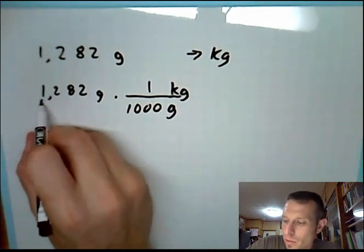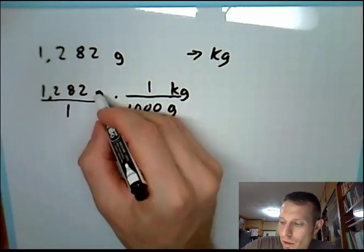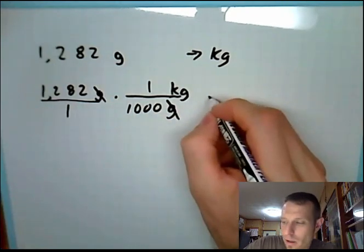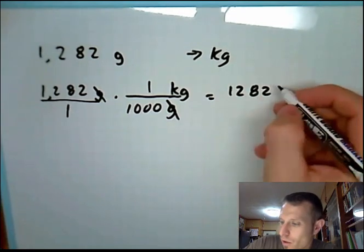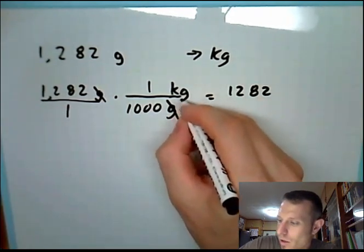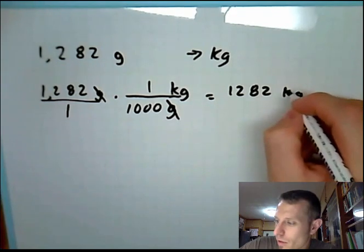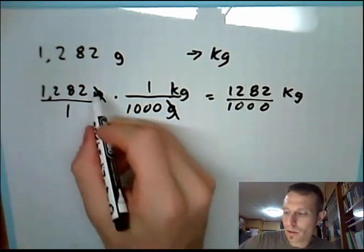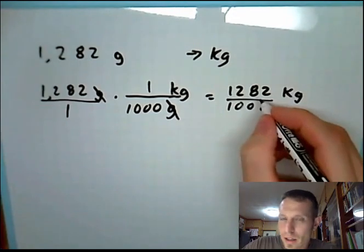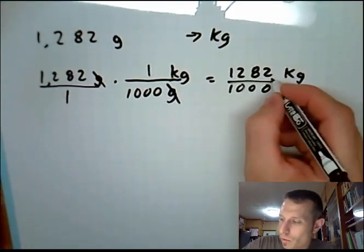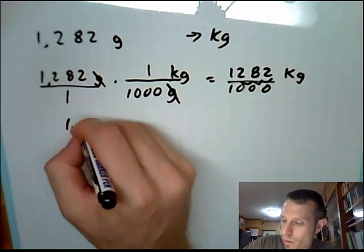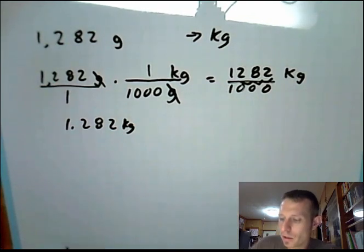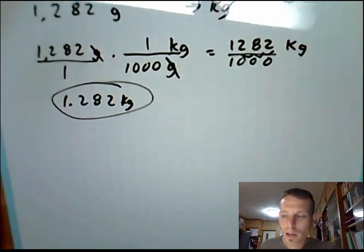And so what we can do is, just like what we canceled before, this goes over 1, we can cancel the gram unit on the top and the gram unit on the bottom. And then we're left with 1,282, and the gram cancels, and here's the times 1 kilogram. So we use the unit of kilogram over 1,000, and this gram unit canceled with the one on the top. So there's no unit on the bottom. And then just as we reviewed, you will move the decimal place over three spots. This equals 1.282 kilograms. Very easy way to do that.